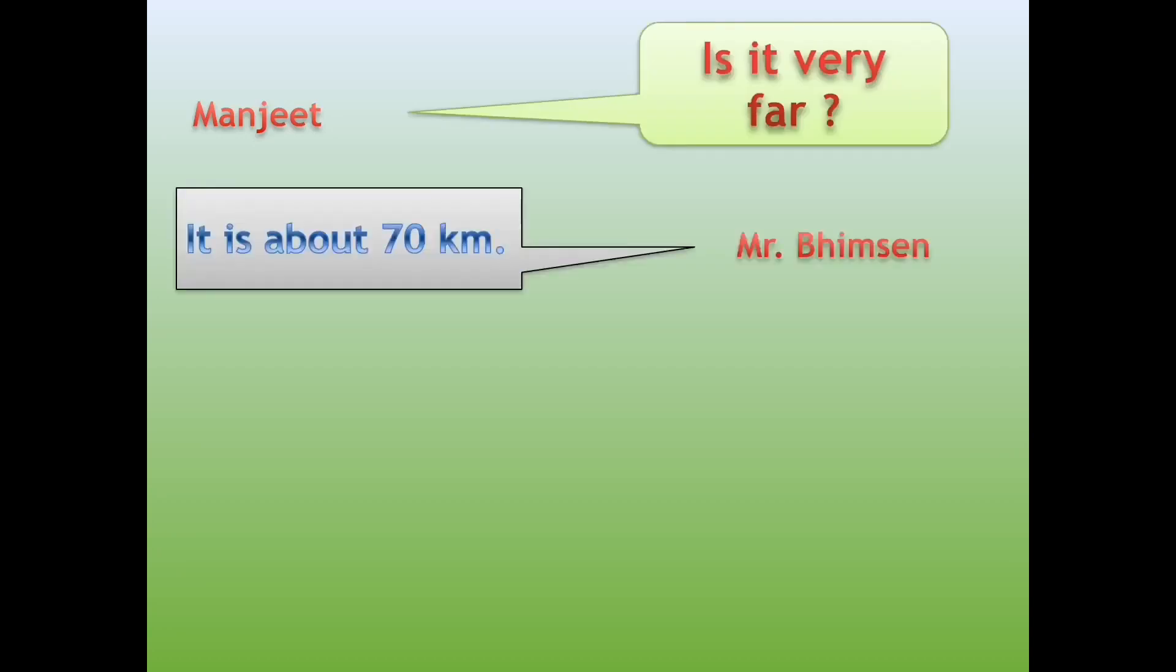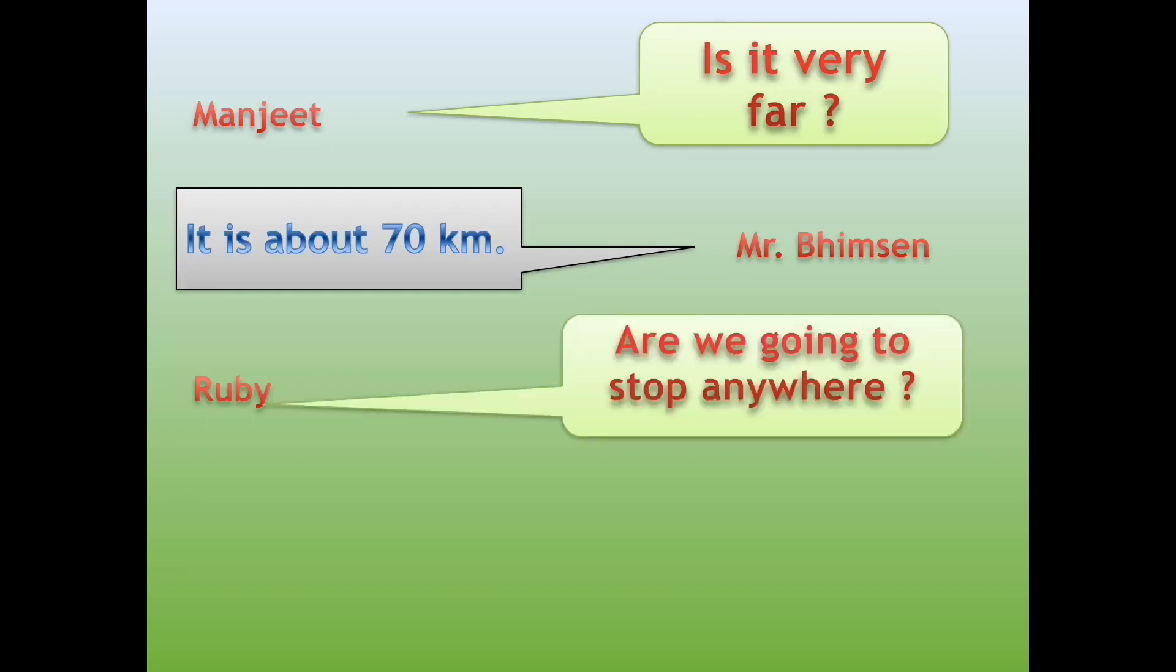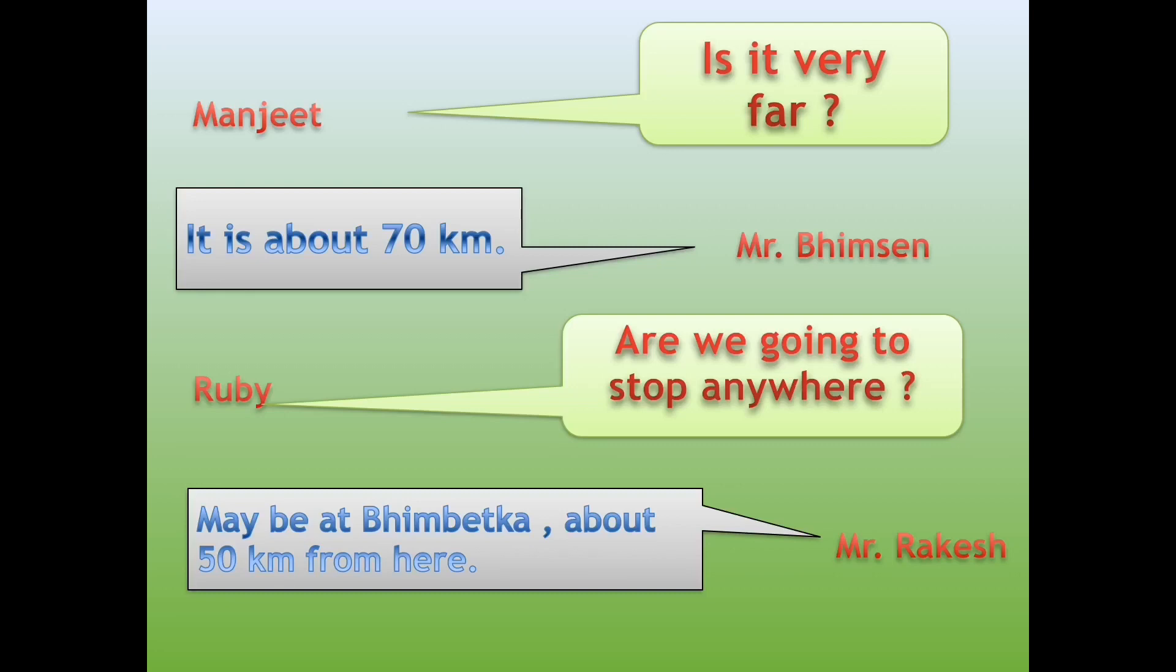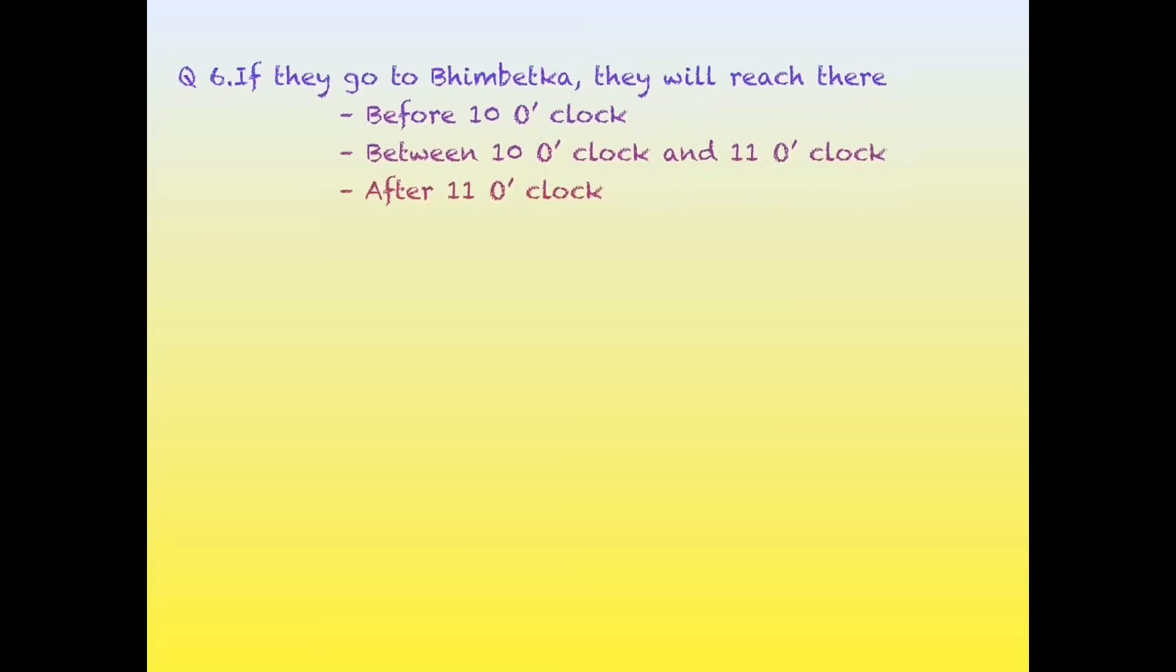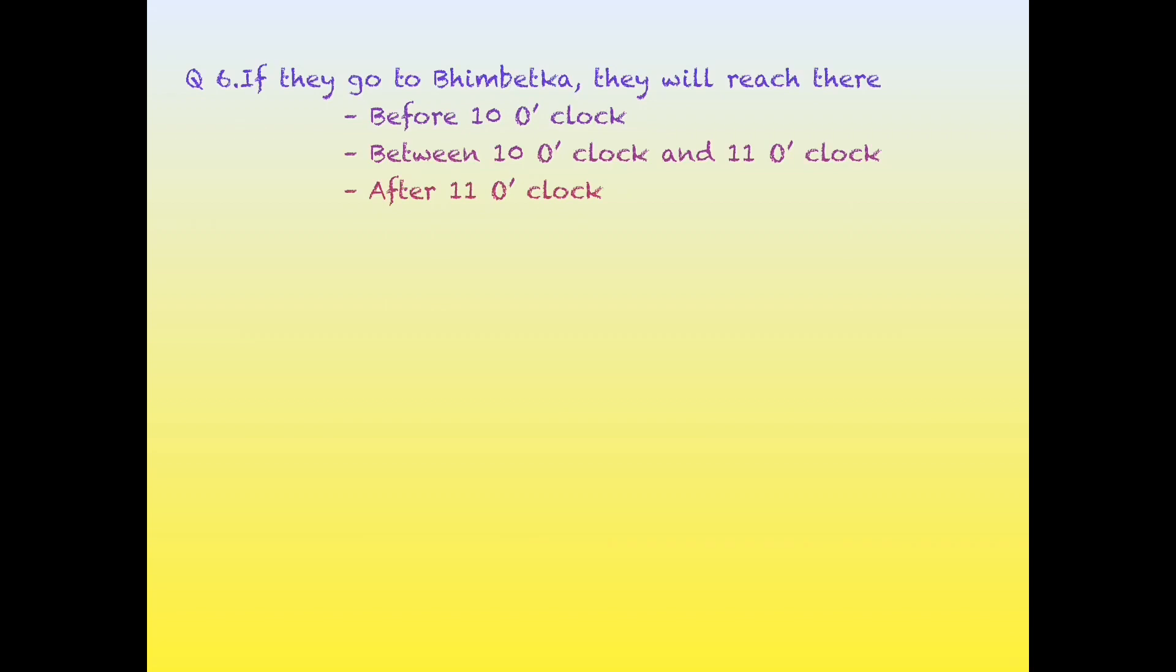Ruby: 'Are we going to stop anywhere, Mr. Rakesh?' Mr. Rakesh: 'Maybe at Vimbatka, about 50 kilometers from here.'